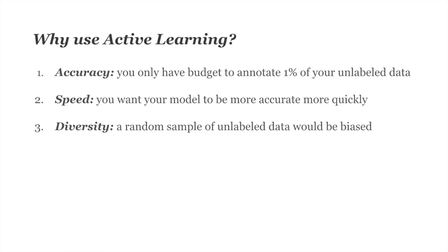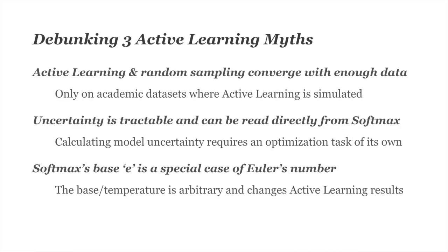Finally, diversity: unless you're looking at academic datasets, a random sample of unlabeled data is typically biased. Your raw data will often over-sample from data sources that over-represent more privileged people. For example, English makes up about 5% of the world's daily conversations but a much larger percent of almost all text datasets. Selecting across different languages using language identification is fairly easy, but there are more subtle, equally problematic ways your data might be biased.